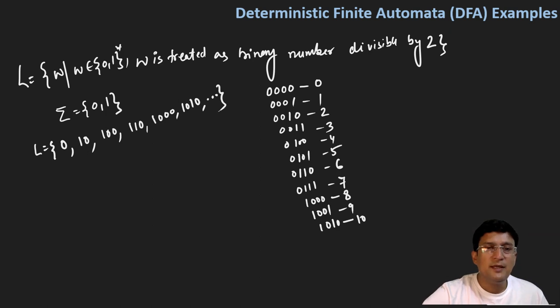You can see that a binary number which ends in zero is the same as an even number.